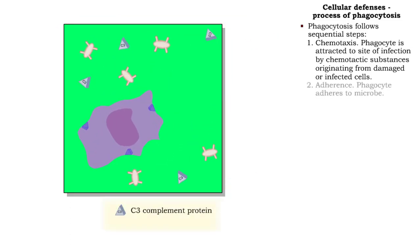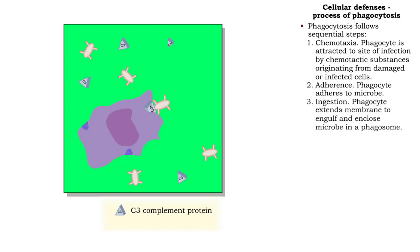Next is adherence: a phagocyte makes contact with and adheres to the surface of a microbe. Ingestion, which is also known as endocytosis, follows. The phagocyte extends its cytoplasm around and eventually encloses the microbe in a vesicle known as a phagosome.